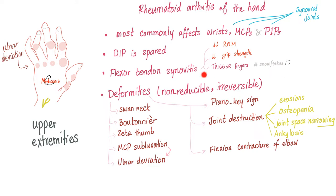Deformities in rheumatoid are non-reducible and irreversible. Irreversible means you can't go back. Non-reducible means when you press on the patient's finger trying to make it straight again, it's not going to happen. There is a disease in rheumatology where deformities are reducible — you press on it and the patient is healed, like magic — but in rheumatoid, non-reducible and irreversible.